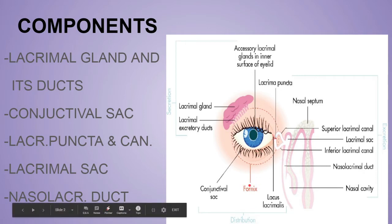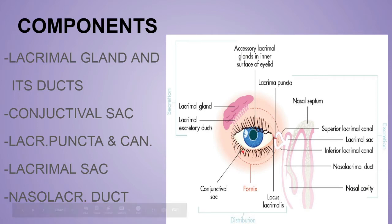There are mainly two types of conjunctival fornix: superior and inferior. The fornix is simply a line that connects the eyelid part and the conjunctiva. When you pull your lower eyelid down or upper eyelid up, the line you see connecting the conjunctiva and the skin part is the conjunctival fornix. If it is in the upper part it is the superior conjunctival fornix, and in the lower eyelid it is the inferior conjunctival fornix.